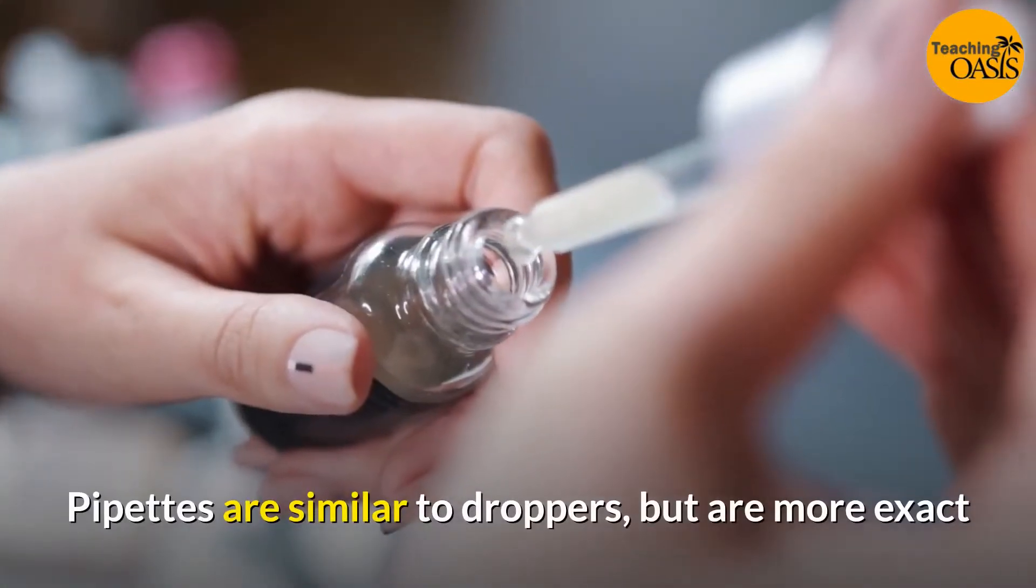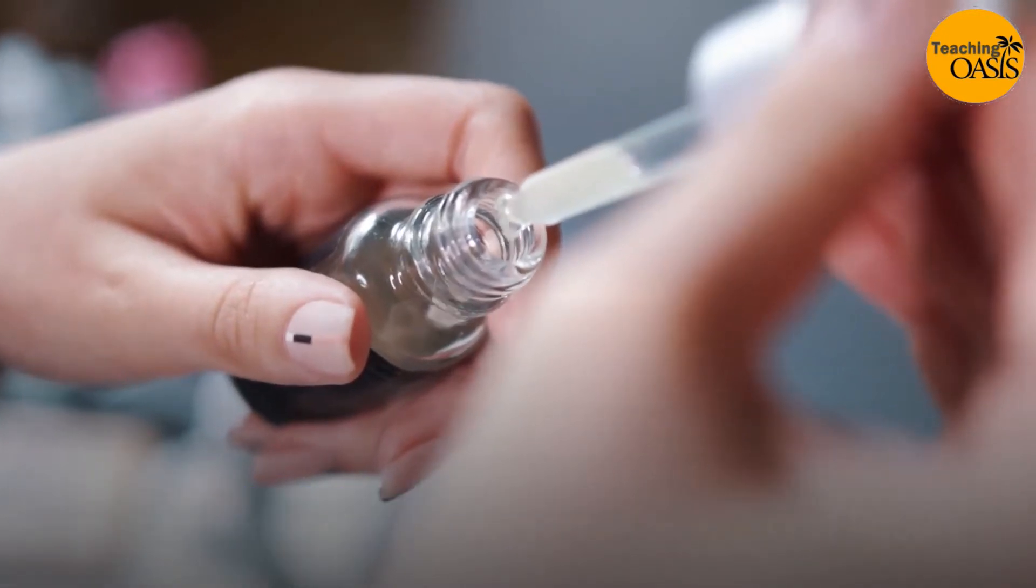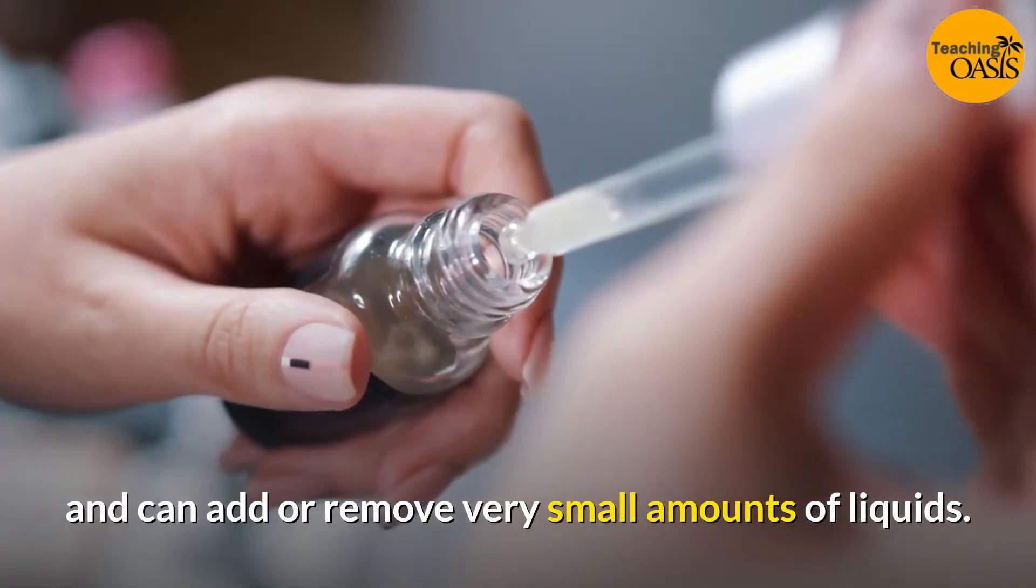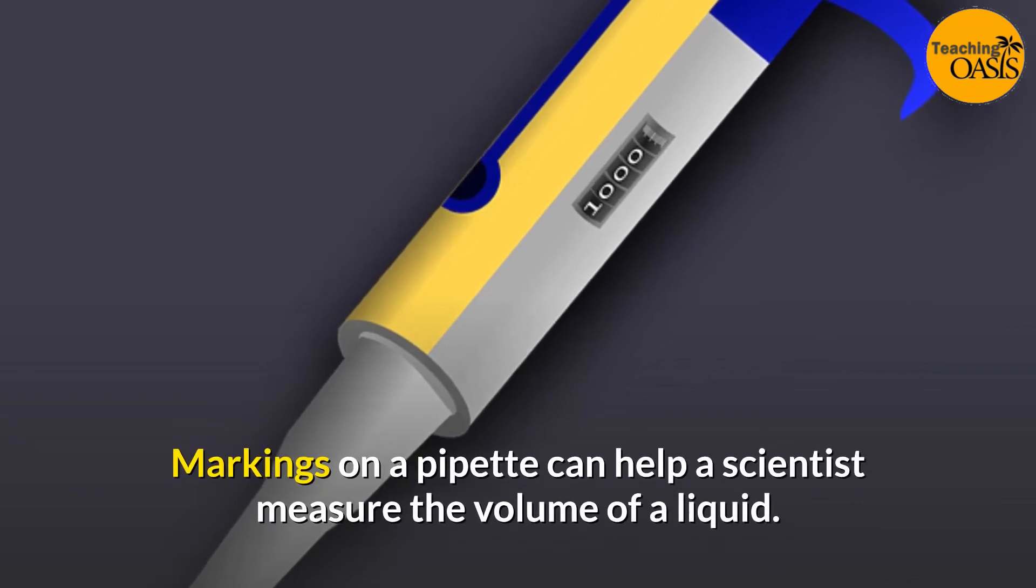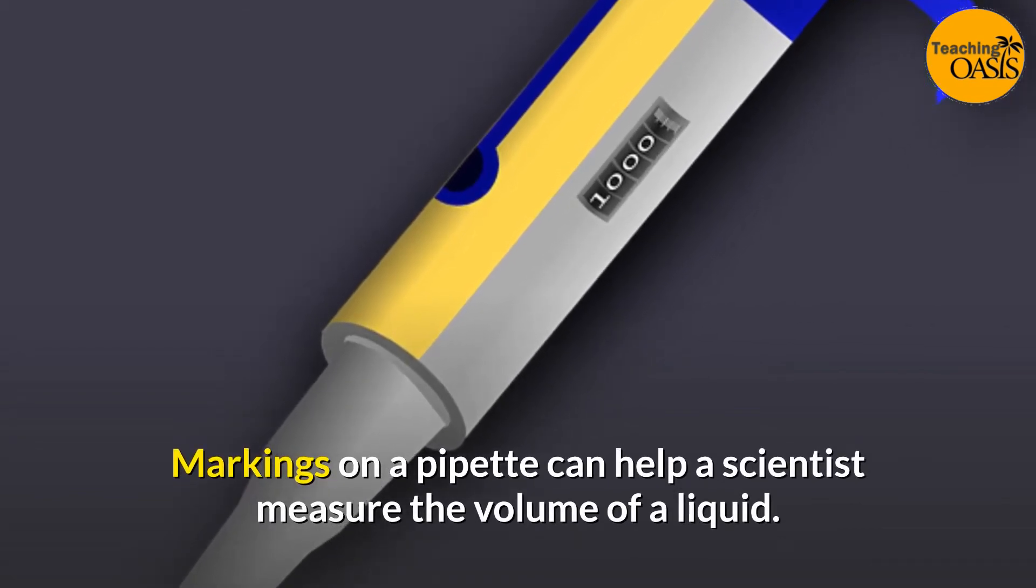Pipettes: Pipettes are similar to droppers but are more exact and can add or remove very small amounts of liquids. Markings on a pipette can help a scientist measure the volume of a liquid.